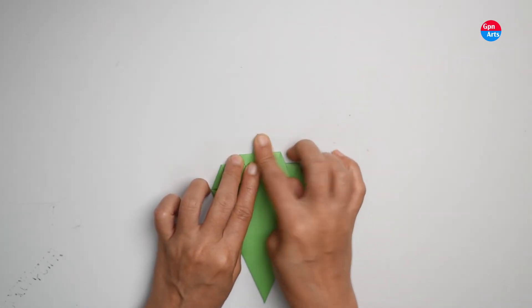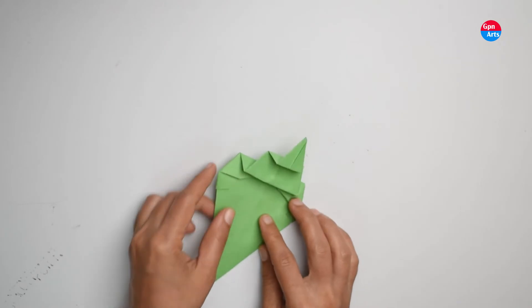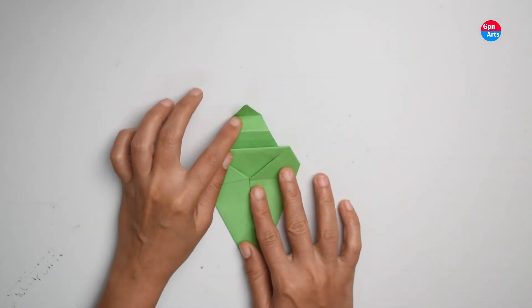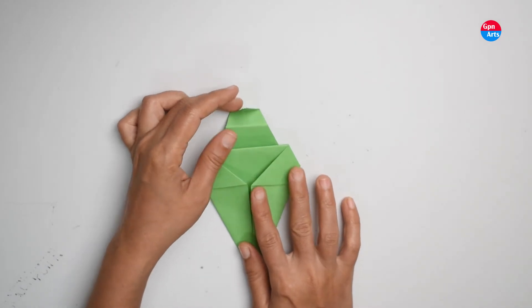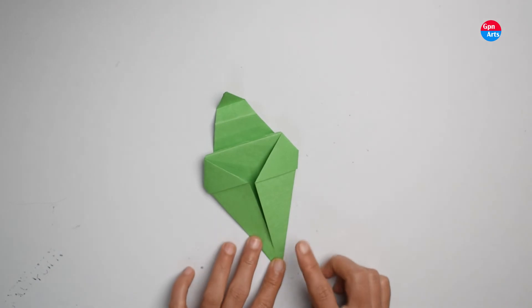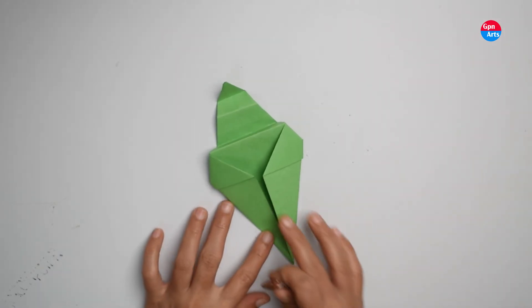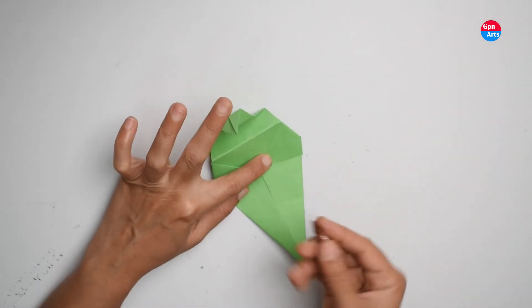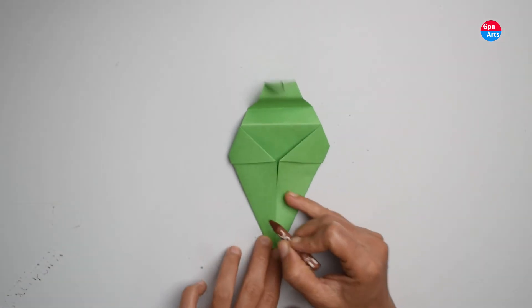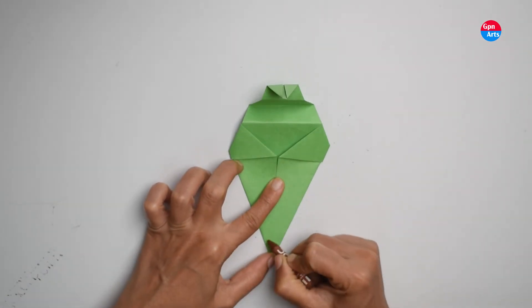Here we have our ice cream cone. Now we're going to decorate it. Take one brown crayon and make lines on the cone shape.